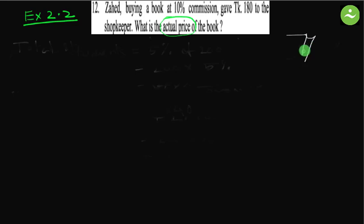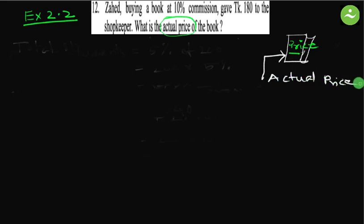Jahir, buying a book at 10 percent commission, gave taka 180 to the shopkeeper. What is the actual price of the book? Here actual price means the price written on the book. Let actual price equals 100 taka.